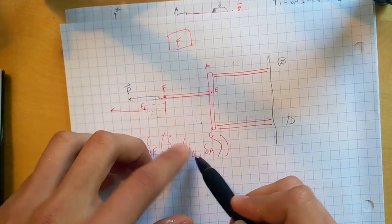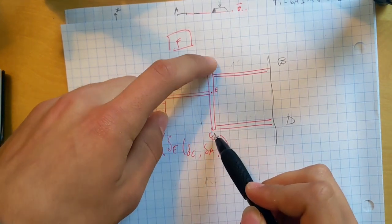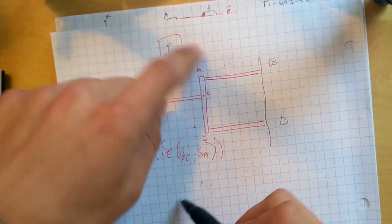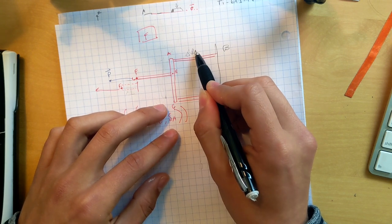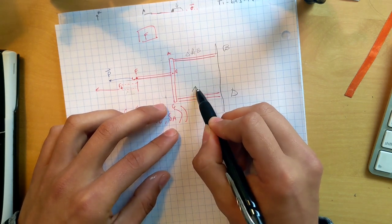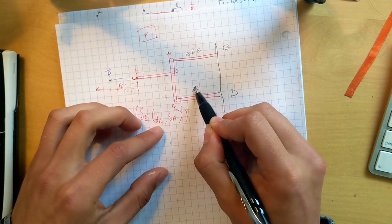To find where that ends up, we need to know where these two points end up. So we ultimately need to find this change in length, the change in, let's call it AB. We need to find the change in length of CD.